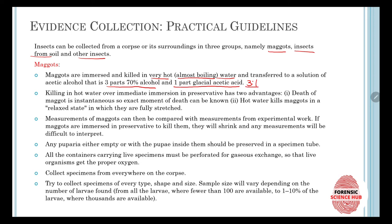Why do we use almost boiling water? First, death of the maggot is instantaneous, so the exact moment of death can be known. Also, hot water kills maggots in a relaxed, fully stretched state. If maggots are immersed in preservatives to kill them, they will shrink and measurements will be difficult to interpret. That is why we kill them in boiling water and not by using preservatives.